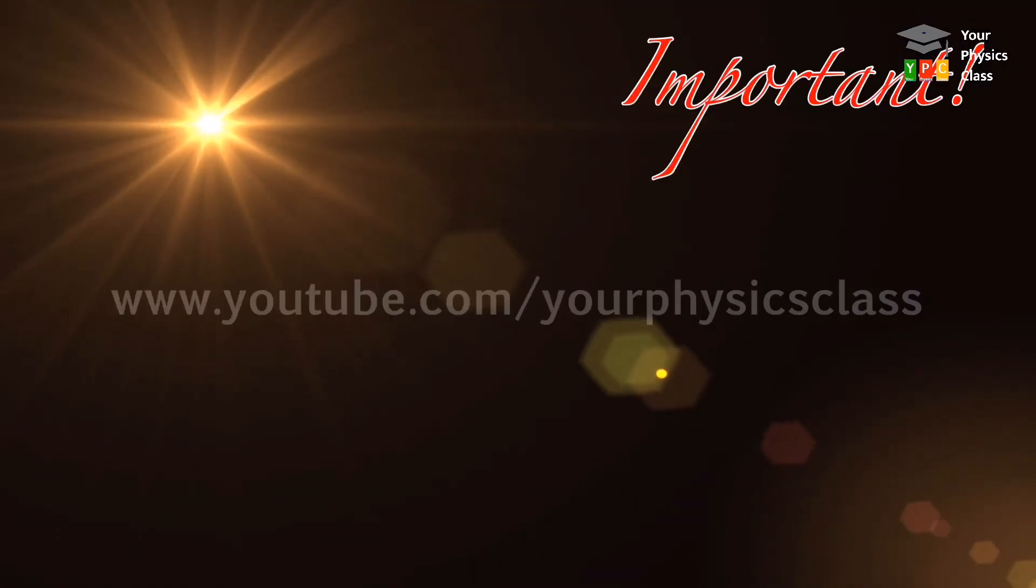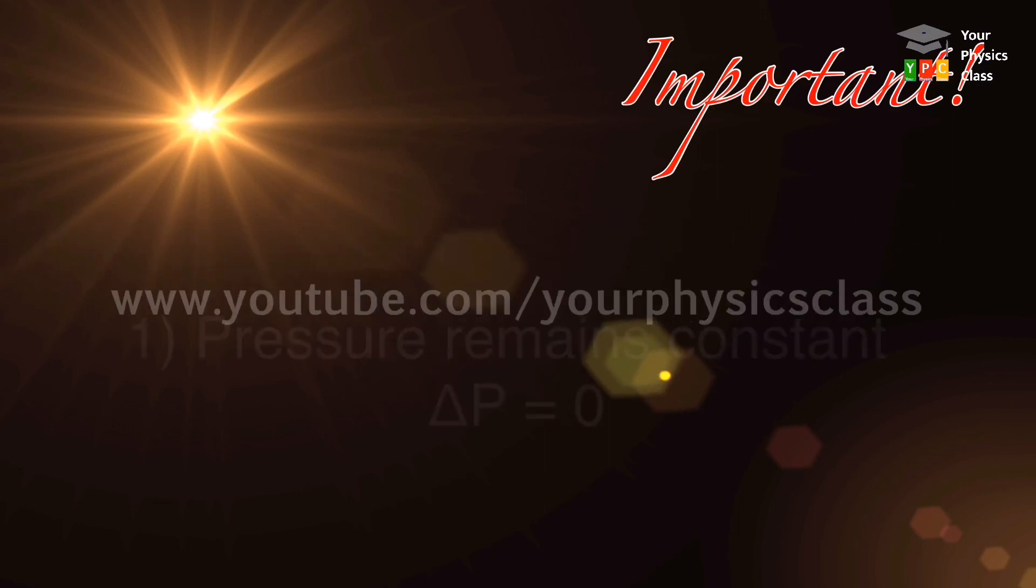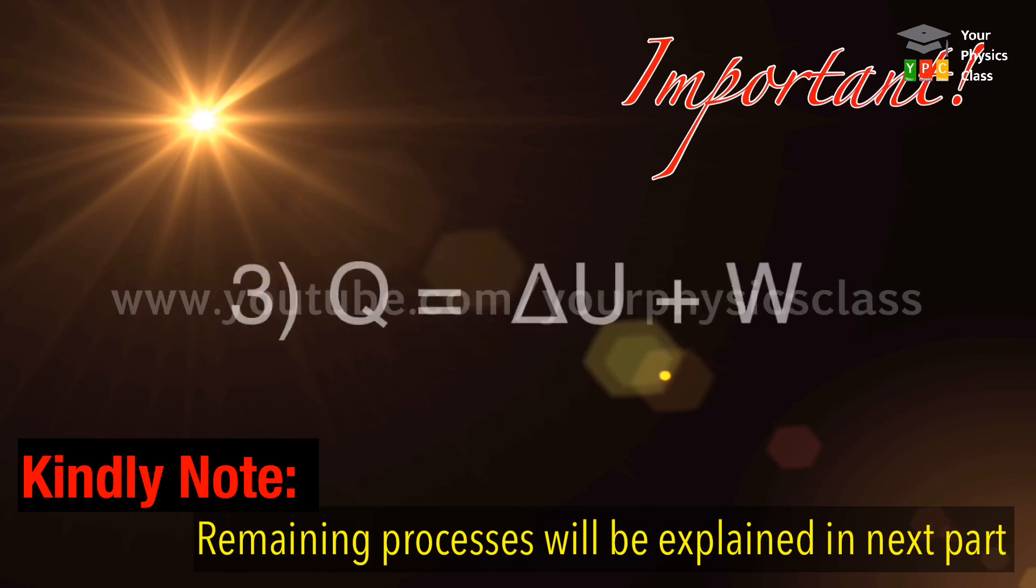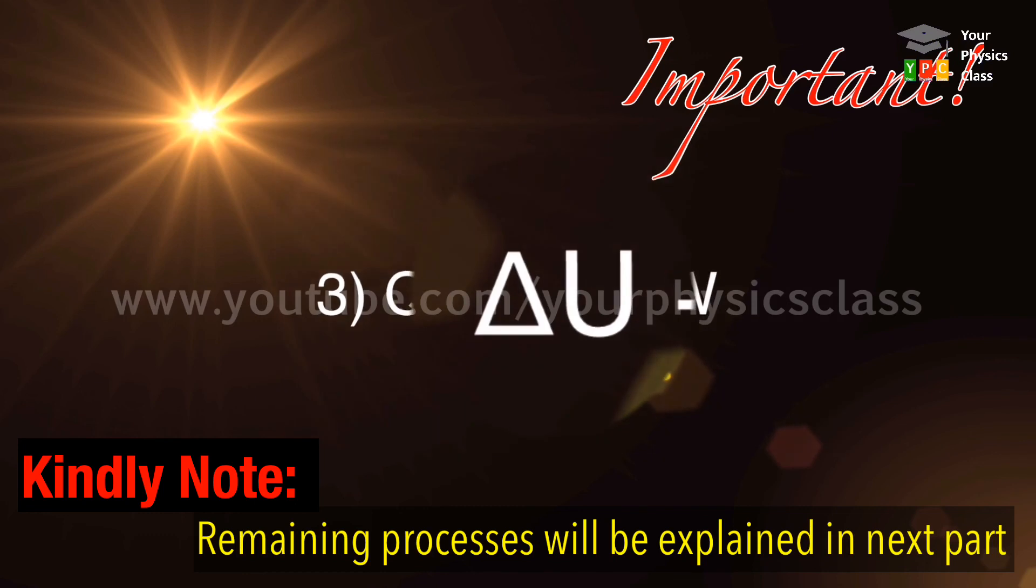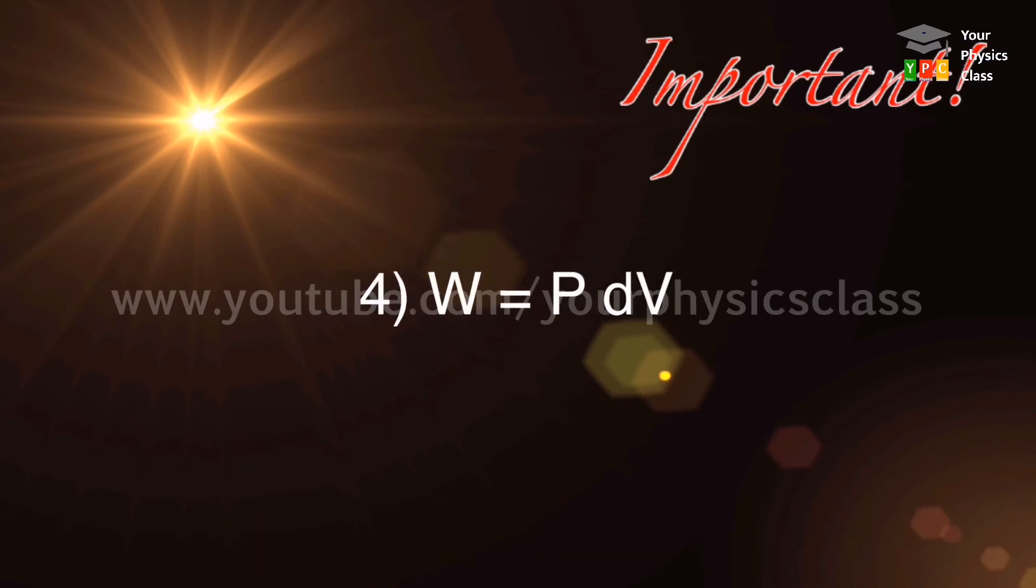The important highlights of isobaric process are: during this process, pressure remains constant. The temperature of the system changes. The heat exchange in this process is partly used for increasing internal energy and partly to do some work. And the last important point is volume changes when work is done.